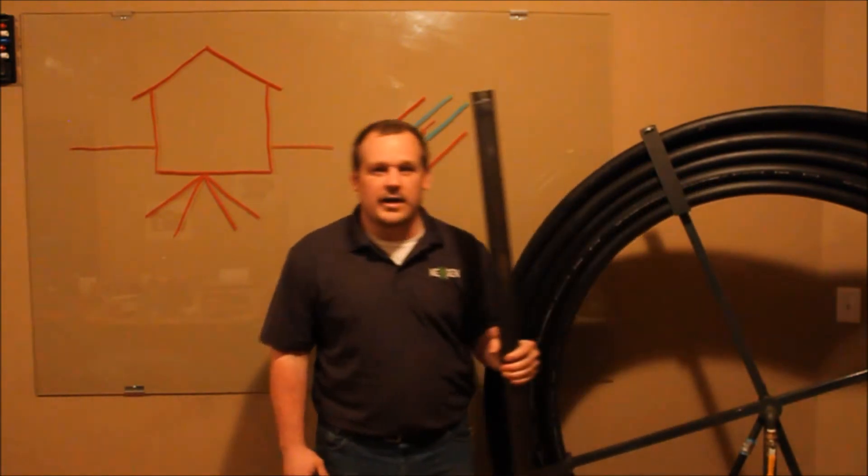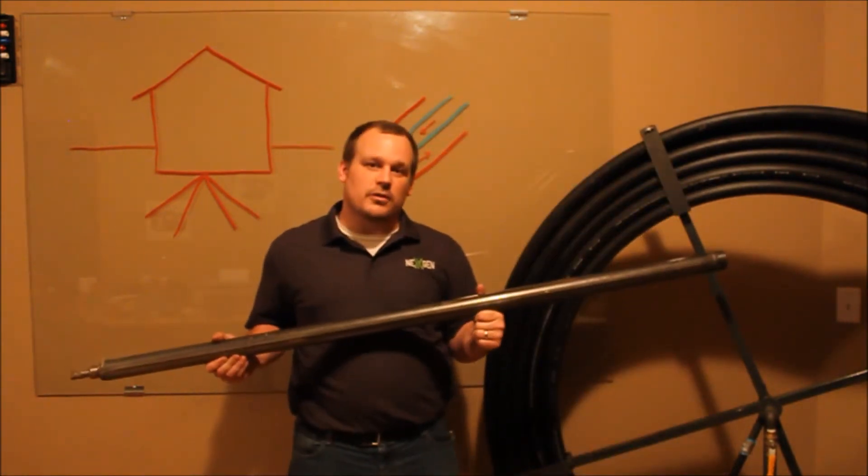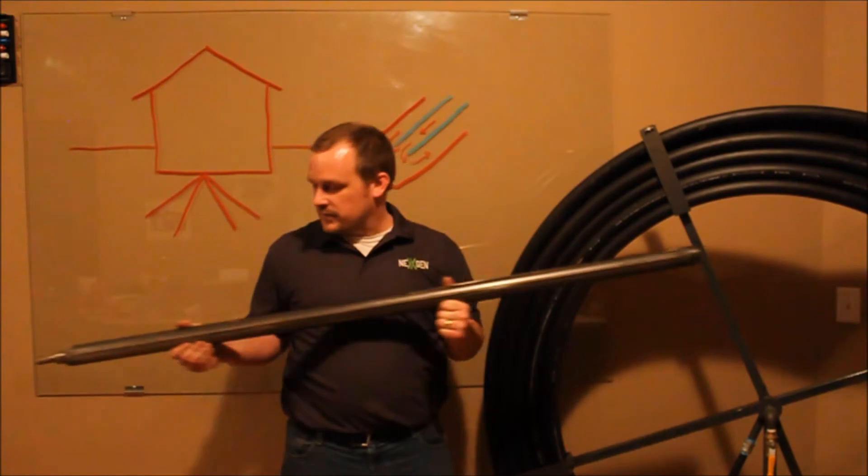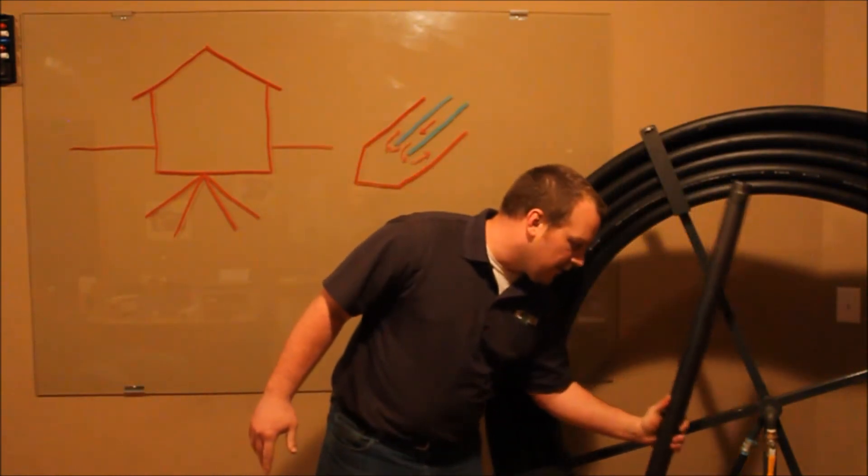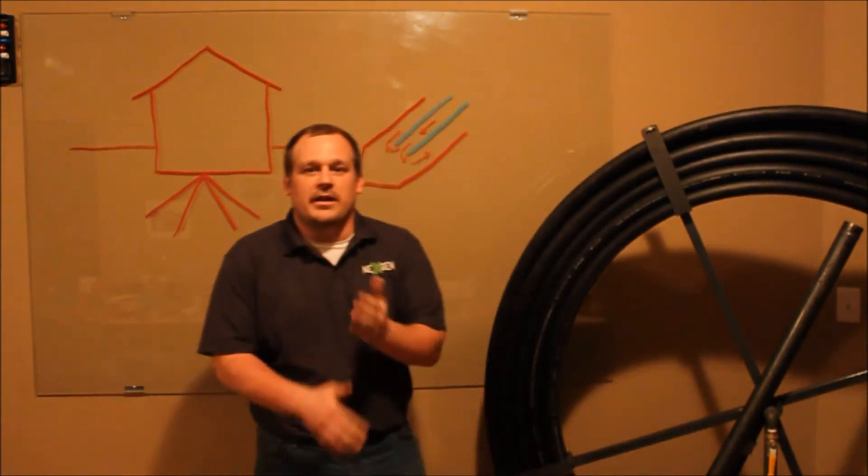This is the bore head that feeds the tube or feeds the loop down into the ground. It's got an internal hammer that's powered by compressed air. You can carry the loop hundreds of feet down in your house.